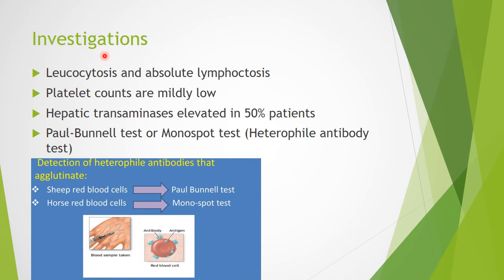Investigations: in the blood picture, there is leukocytosis and absolute lymphocytosis; platelet counts are mildly low; hepatic transaminases — AST and ALT — are elevated in 50% of patients, which can cause jaundice. The Paul-Bunnell test or monospot test, also called the heterophile antibody test, is positive. Heterophile antibodies react to antigens other than the Epstein-Barr virus antigen — they can agglutinate sheep red blood cells (Paul-Bunnell test) or horse RBCs (monospot test).